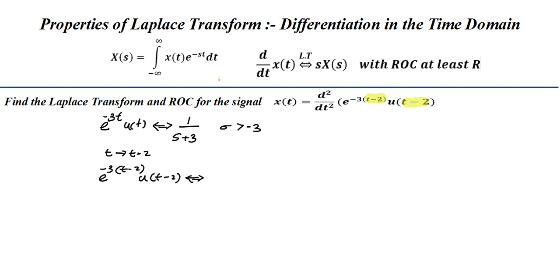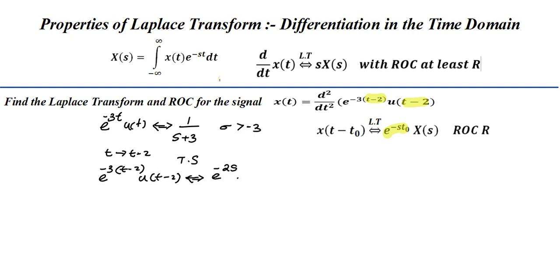We now apply the time-shifting property of Laplace transform. The time-shifting property states that a shift by t₀ introduces e^(−s·t₀)·X(s) with the same ROC. Applying this property here with t₀ = 2, the transform becomes e^(−2s) · 1/(s+3), and the ROC remains σ > −3.